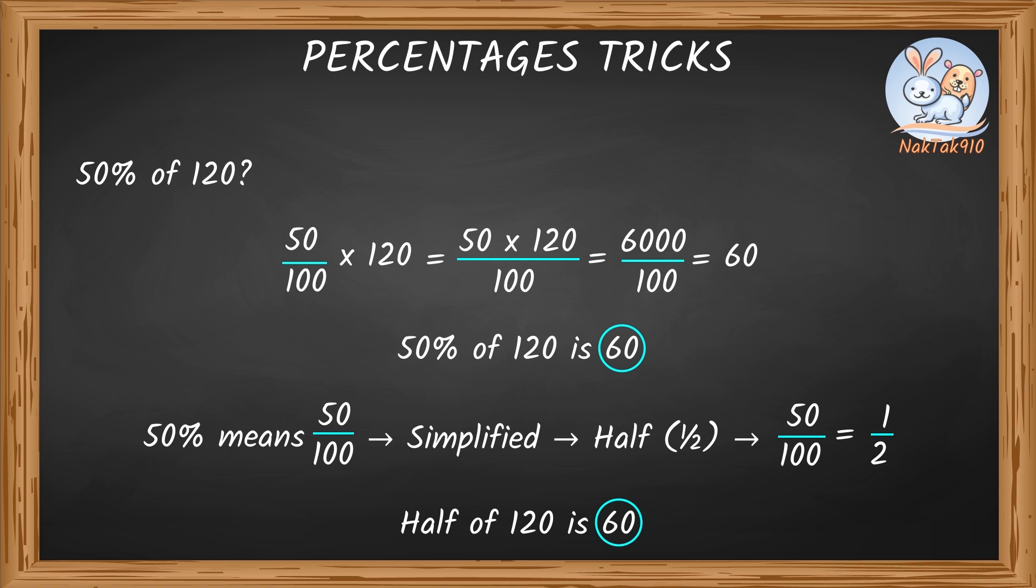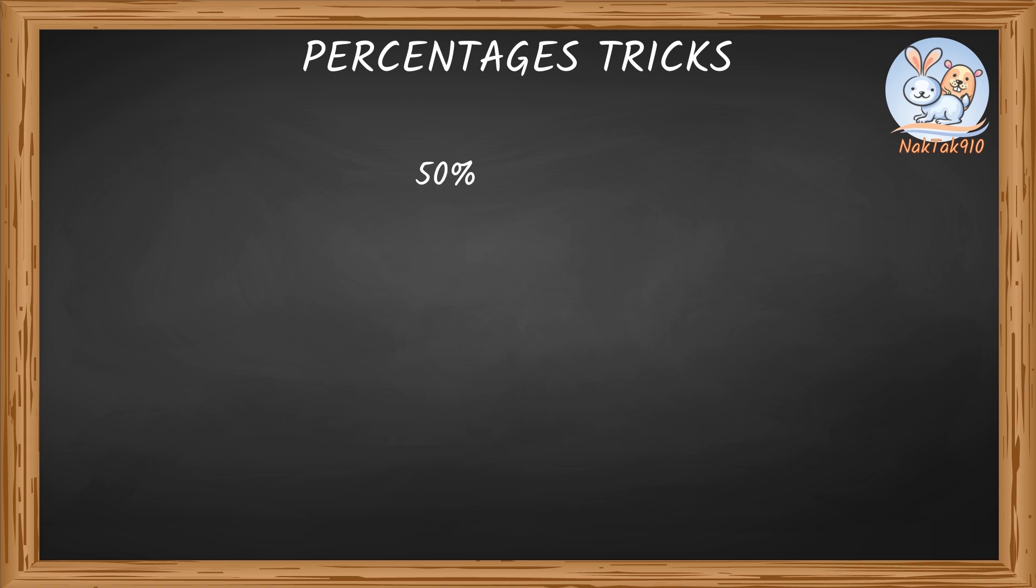This is so easy! Now tell me, what is 50% of 50? Half of 50 is 25. So, 50% of 50 is 25. Try this! What is 50% of 36? Half of 36 is 18. So, 50% of 36 is 18.